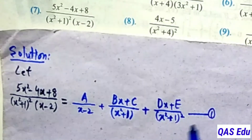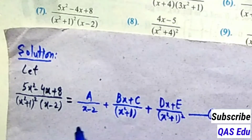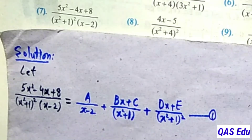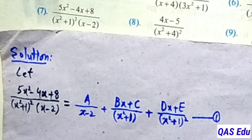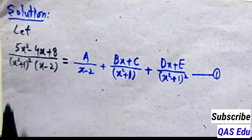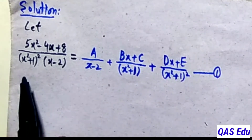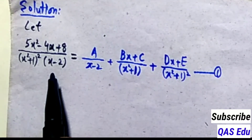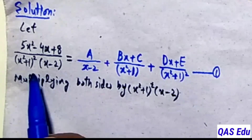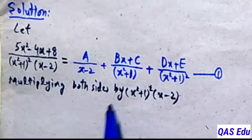We will set up equation number 1 with constants A, B, C, D, E. The fraction equals A over the linear factor, plus Bx plus C over the quadratic factor, plus Dx plus E over the quadratic repeated factor. Then we multiply both sides by x squared plus 1 whole squared into x minus 2.